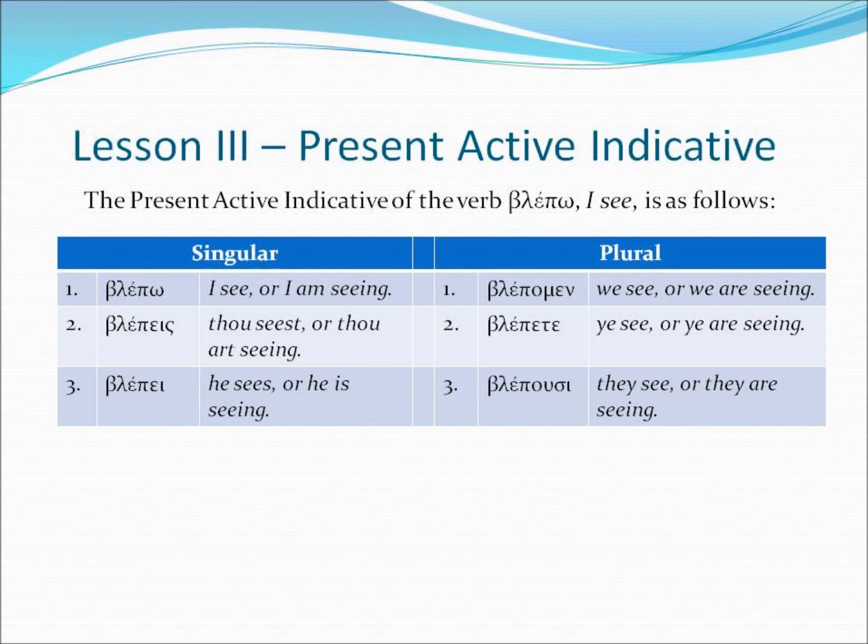Let's provide another example — the word blepo. Blepo means I see. The present active indicative first person singular for blepo is I see, or I am seeing. The second person singular would be blepes — thou seest, or thou art seeing. Third person singular, blepe — he sees, or he is seeing. Shifting over to the plural: first person plural, we see or we are seeing, would be blepamen; second person plural, ye see or ye are seeing, would be blepete; and finally blepusi is the third person plural — they see, or they are seeing.